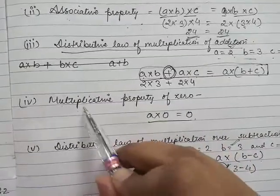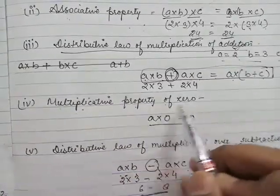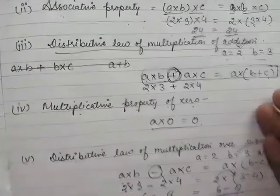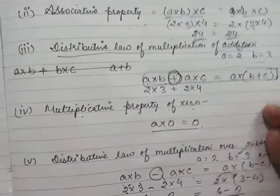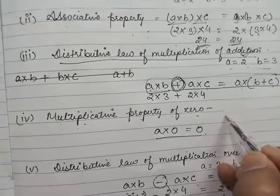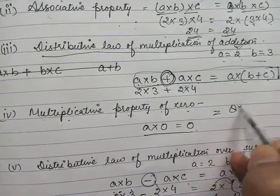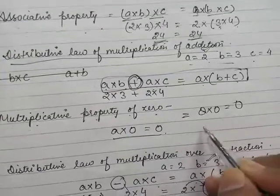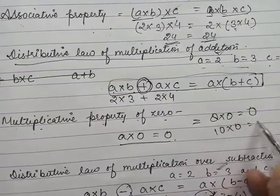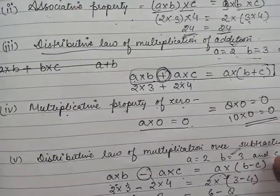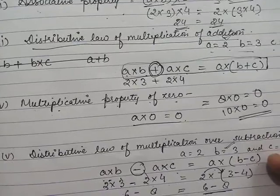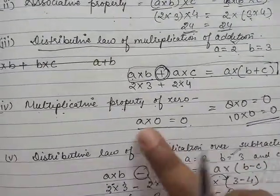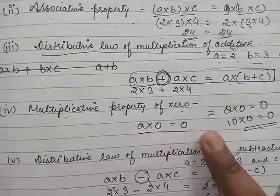Another property is the multiplicative property of 0. If 0 is multiplied by any number, the value will be 0 itself. For example, 8 × 0 equals 0, and 10 × 0 equals 0. So in this property, any number multiplied by 0 always gives 0.